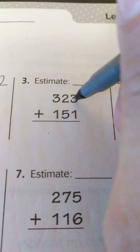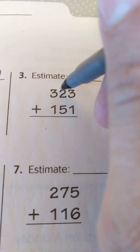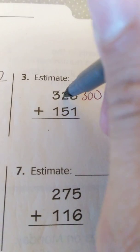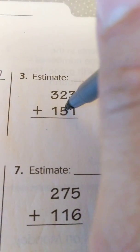On number three here I'll show you another example of estimating. In the tens we have a 2, so that's less than 5, so this will stay at 300 as opposed to going up to 400.